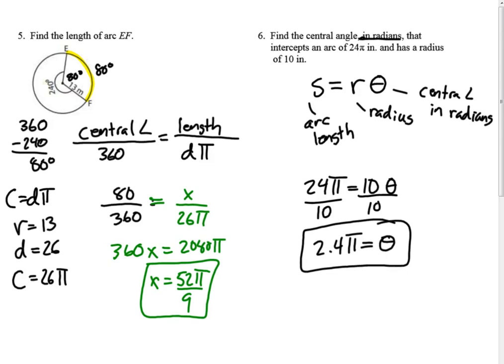S equals r theta, s equals r theta. When the central angle is in radians, we use s equals r theta, s equals r theta. The priority is on area of the sector. That's the more commonly asked one, but arc length is one that could be asked as well. I'll see you back here soon.